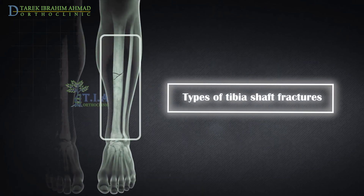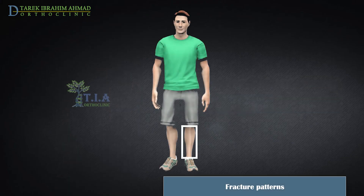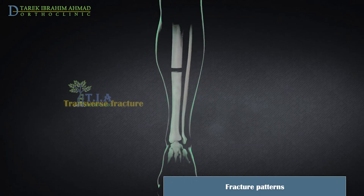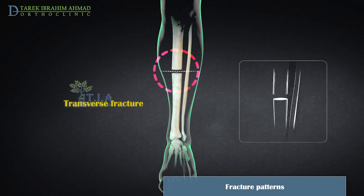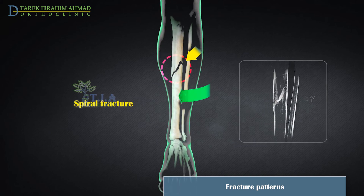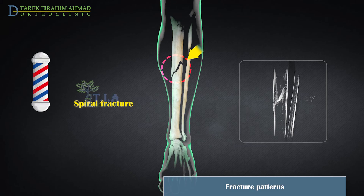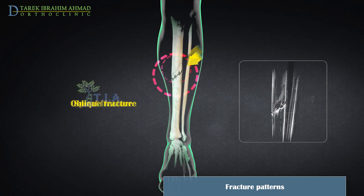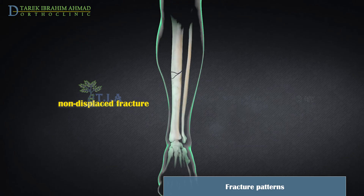Types of tibia shaft fractures. The type of tibia fracture greatly depends on the initial force that causes the break. Direct trauma leads to transverse and comminuted fractures. In a transverse fracture, the break is a straight horizontal line going across the tibial shaft. Rotational forces or twisting lead to oblique or spiral fractures. In a spiral fracture, the fracture line encircles the shaft like the stripes on a barbershop sign. An oblique fracture has an angled line across the shaft.